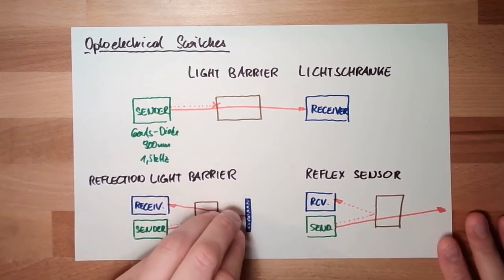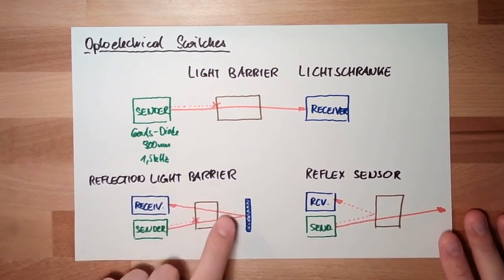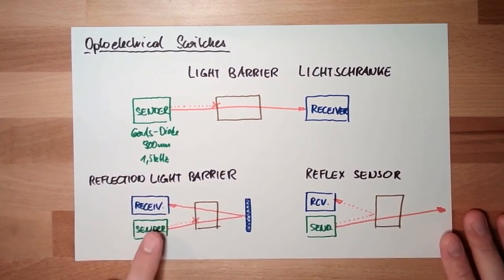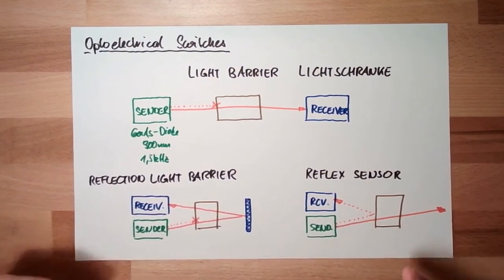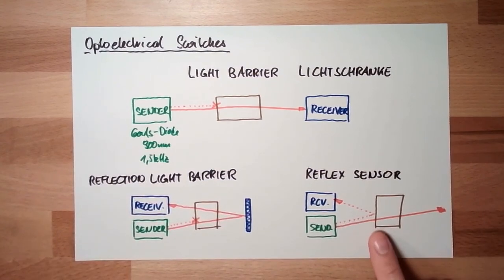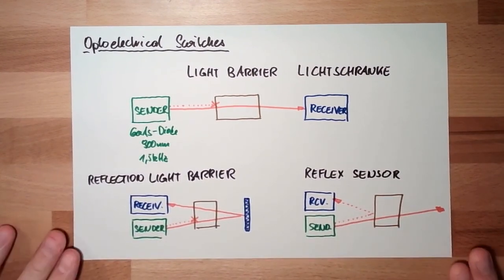And suddenly this thing is no longer working. Because the nice shiny paper is also reflecting. And the receiver does not see now the object. Same thing applies here. If everything is working fine. And then there's a special edition with matte black finish. Then this might no longer work.